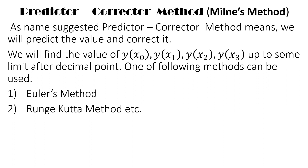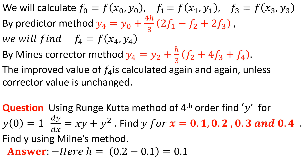We generally use Euler's method or the Runge-Kutta method of order four. We will calculate f0 from x0 and y0, then f1 from x1 and y1, and similarly f3 from x3 and y3. The predictor value gives us y4, and h/3 represents the interval, with f1, f2, and f3 already discussed.